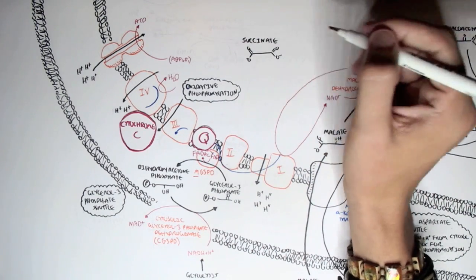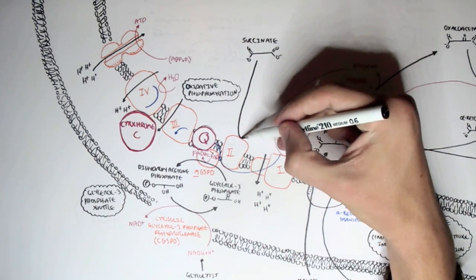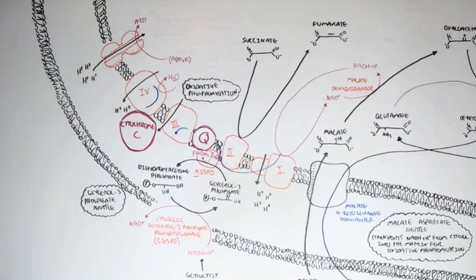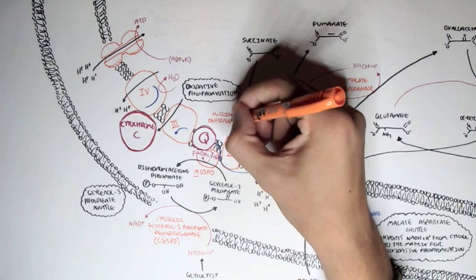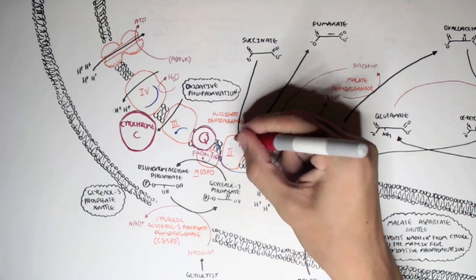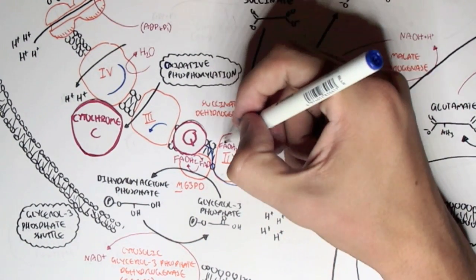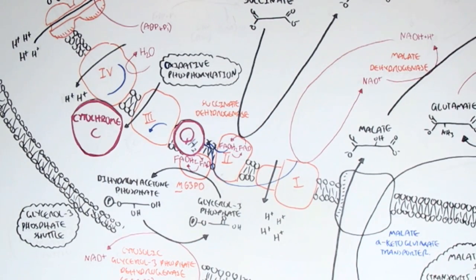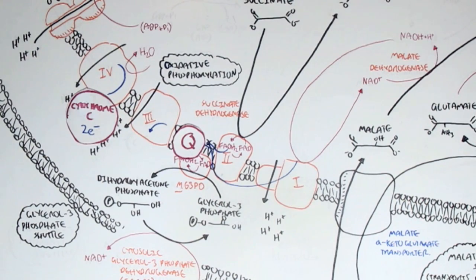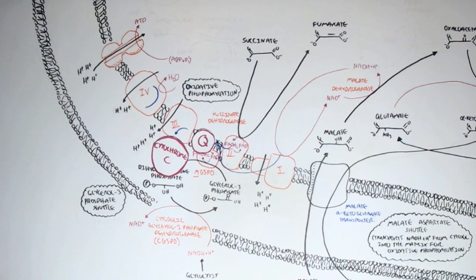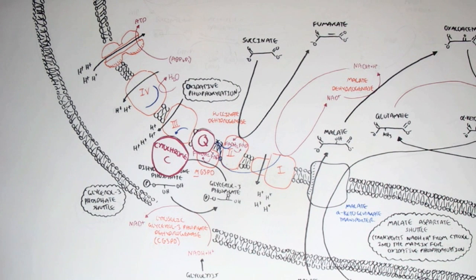Finishing the oxidative phosphorylation overview: complex 2 is known as succinate dehydrogenase, and it converts succinate from the Krebs cycle to fumarate. During this process, FAD is reduced to FADH2, which provides electrons to ubiquinone, converting it to ubiquinol. Ubiquinol gives electrons to complex 3, which passes them to cytochrome C, pumping 4 hydrogen ions. Cytochrome C then goes to complex 4, which pumps 2 hydrogen ions, and those 6 hydrogen ions go through ATP synthase to make ATP. Since FADH2 bypasses complex 1, fewer hydrogen ions are pumped and less ATP is produced overall.